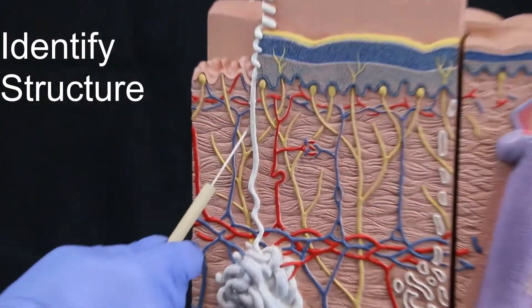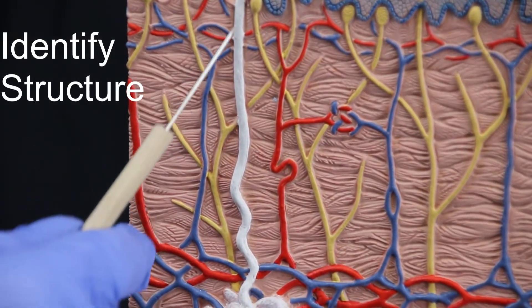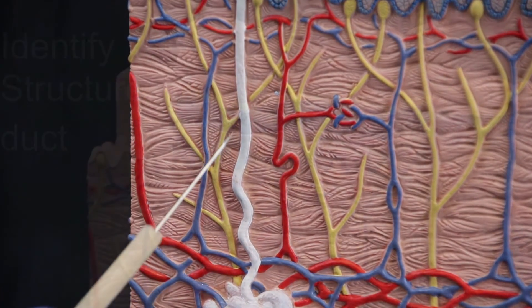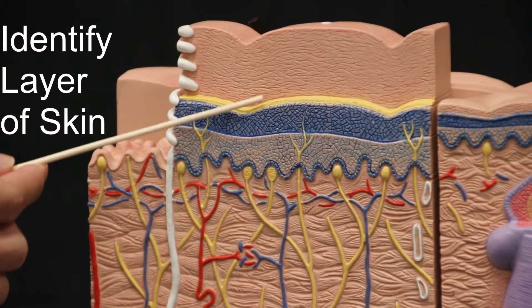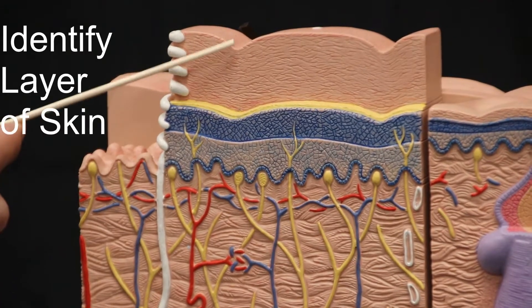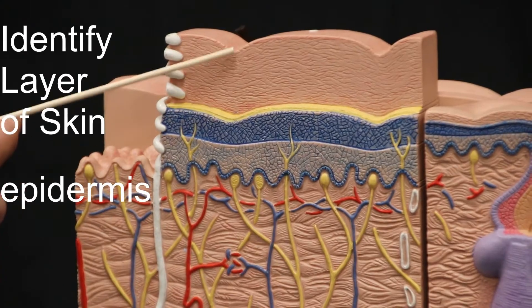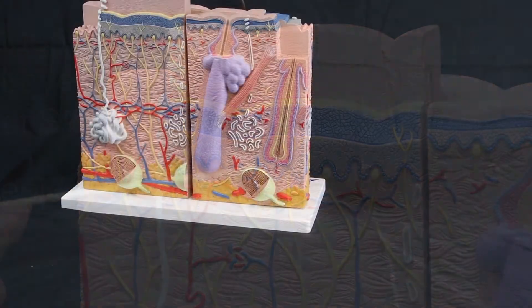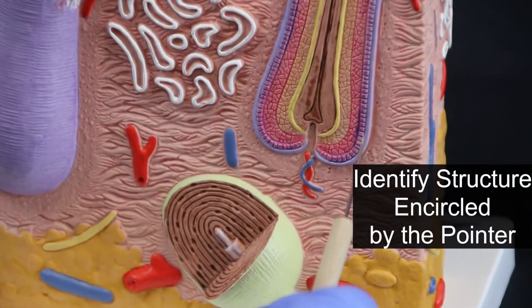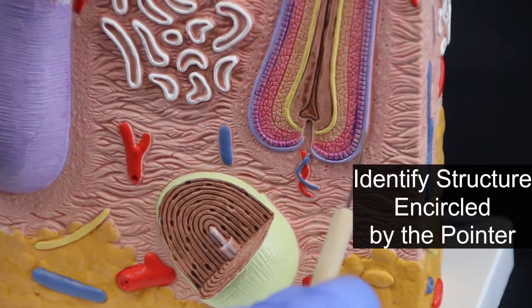ID Structure. Dermis. ID layer of skin. Epidermis. ID structure encircled by the pointer. Hair bulb.